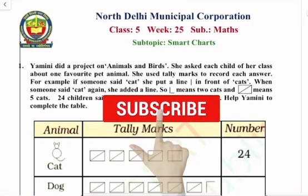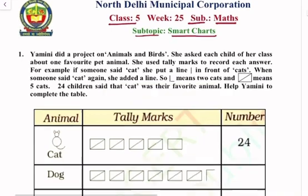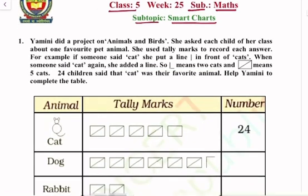Hello students, today in Class 5 our subject is Math and subtopic is Smart Charts. So let's start Question Number 1. Yamini did a project on animals and birds. She asked each child of her class about one favorite pet animal.